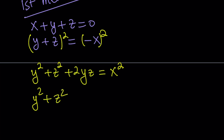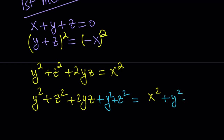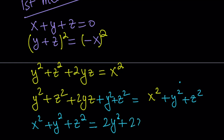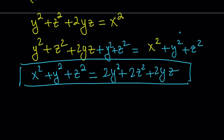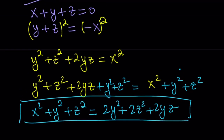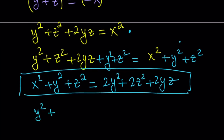Let me show that. I have this expression, and to both sides I add y squared plus z squared. That gives me x squared plus y squared plus z squared on the right-hand side. So we have an expression: x squared plus y squared plus z squared equals 2y squared plus 2z squared plus 2yz. This is something I'll use later, so let's save it.